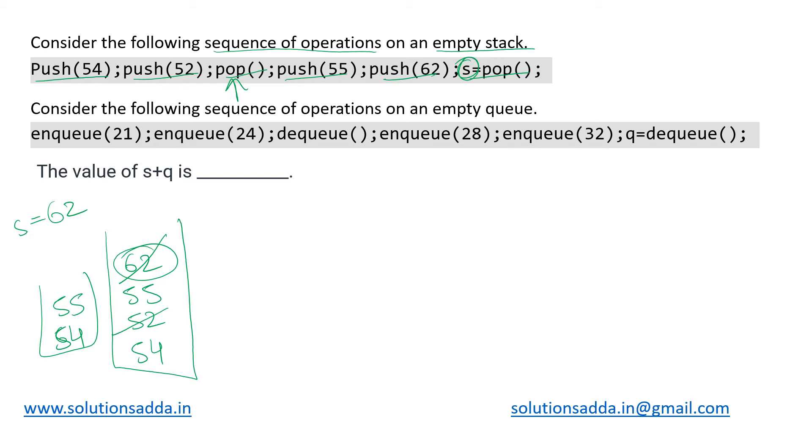Now an empty queue has been given and on that we are performing this set of operations. This is our queue. Enqueue 21, so we enqueue that from this end, then we are enqueuing 24.